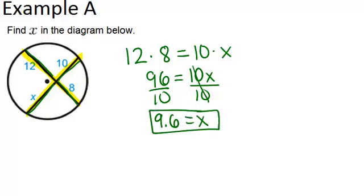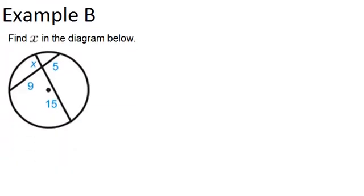Alright, let's go to example B. Find X in the diagram below. So this is exactly the same situation. We have two chords that are intersecting. Notice it has nothing to do with whether they go through the center or not. This property will hold no matter what. So we're going to take the two segments that are on the same chord and multiply them and set them equal to the two segments on the other chord. So 9 times 5 equals 15 times X.